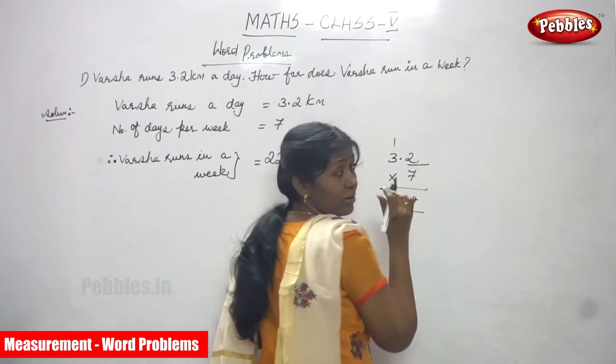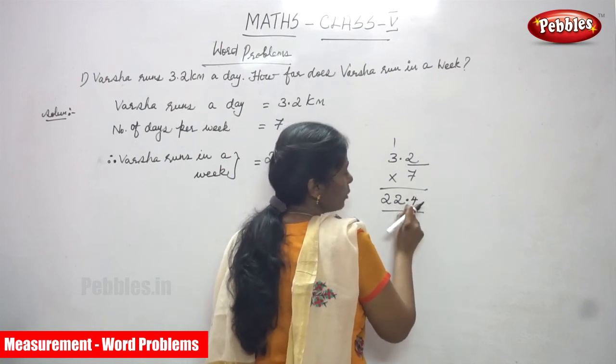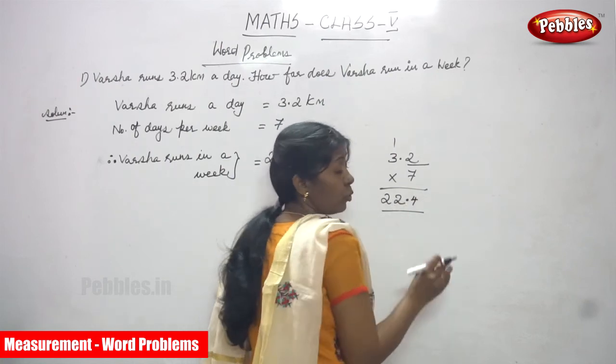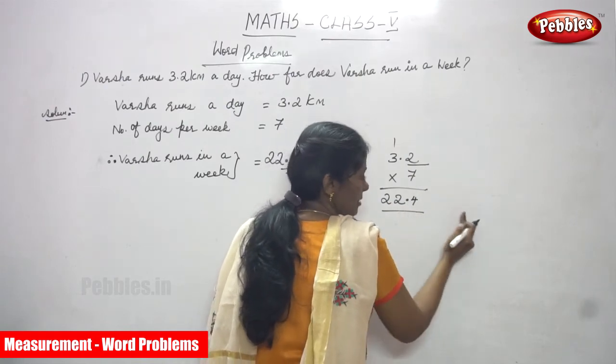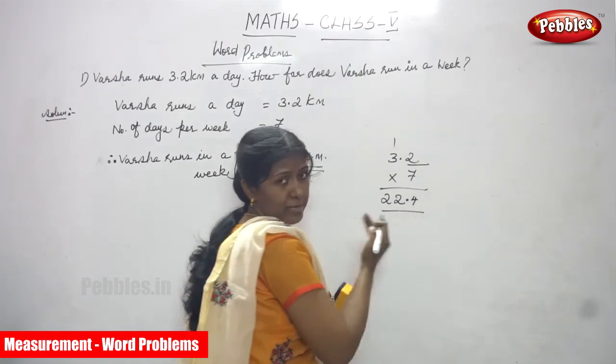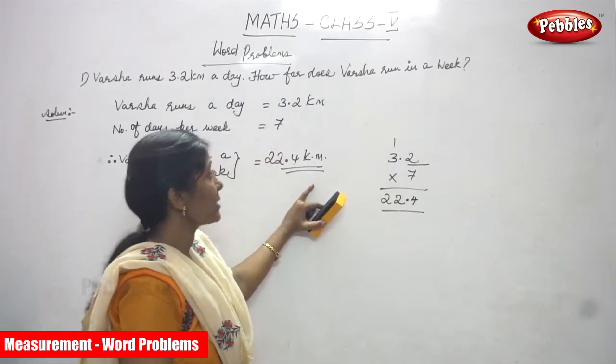You just look at the point where it is and put a point. That means 22 is a whole number, then you put a point and write the number 4. The answer is 22.4 kilometer.